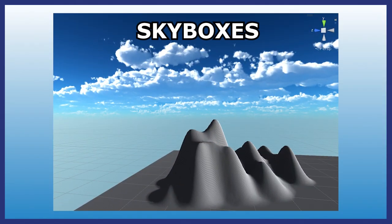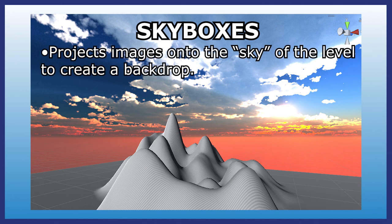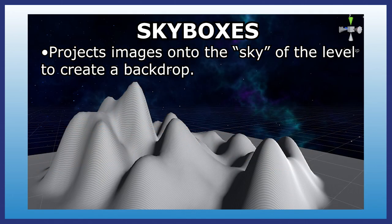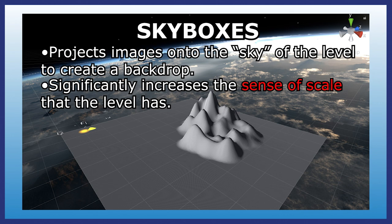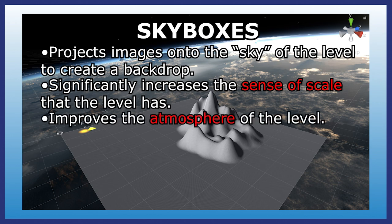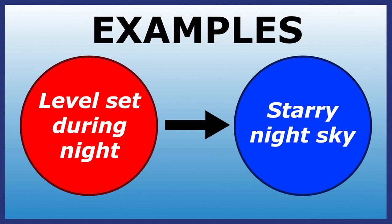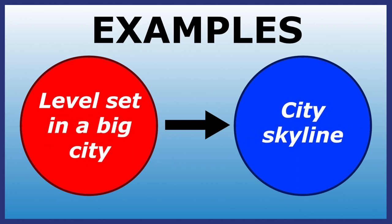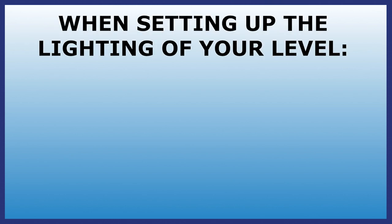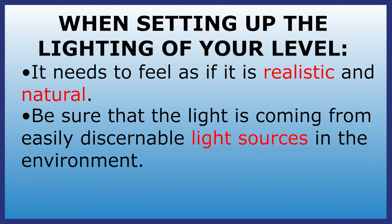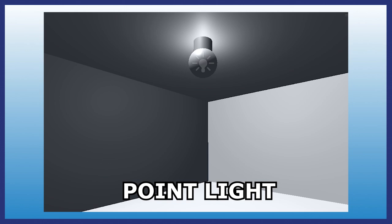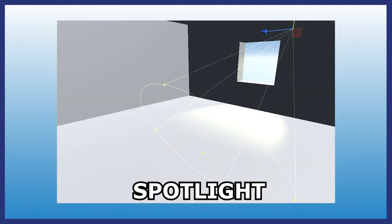You should also know about skyboxes, which serve as the backdrop for a level. They project an image way off in the distance, featuring things such as the sky, mountains, and buildings to make the level feel significantly larger in scale than it actually is. They also do a lot to improve the general atmosphere, so use one that will work well within the visual theming of your level. When you're setting up the lighting, you need to make sure that it looks realistic and natural. Establish discernible light sources so the player knows where the light is actually coming from. For example, a point light could be coming from a light bulb, while a spotlight could be coming from an open door or window.